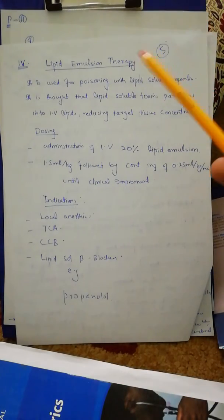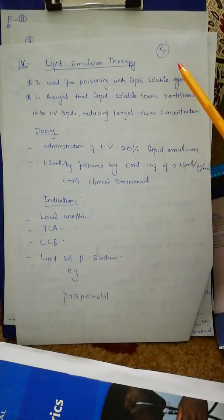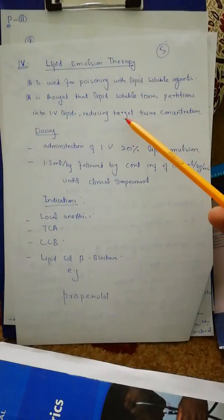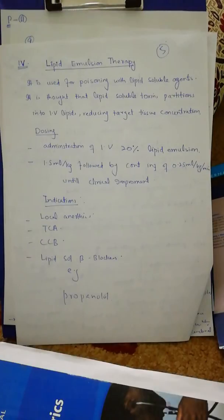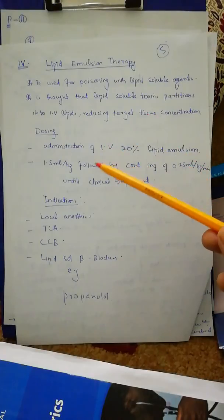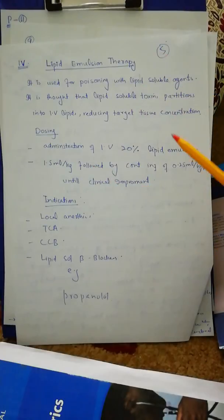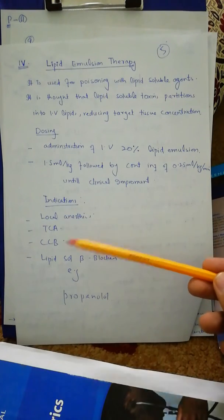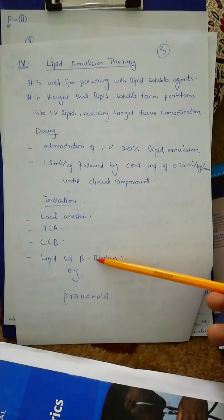The last method is lipid emulsion therapy, used in poisoning with lipid-soluble agents. It is thought that lipid-soluble toxins partition into the IV lipids, reducing target tissue concentration — holding the poisons in the IV lipids and preventing them from depositing in target tissues like the brain and lungs. The dosing is intravenous 20% lipid emulsion at 1.5 ml per kg, followed by continuous infusion of 0.25 ml per kg per minute until clinical improvement. Indications include local anesthetic toxicity, tricyclic antidepressants, calcium channel blockers, and lipid-soluble beta blockers like propranolol.